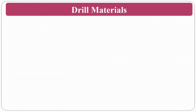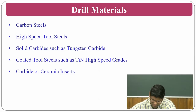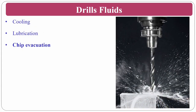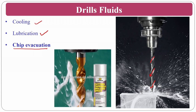Drill bit materials include carbon steels, high speed steel, solid carbides, coated steels, and ceramic inserts. The main functions of cutting fluid in drilling are cooling, lubrication, and chip evacuation — the fluid travels through the flutes to help evacuate chips from the machining zone. Sprays can also be used alongside cutting fluids to minimize chip sticking.